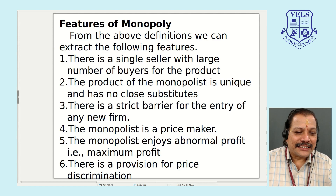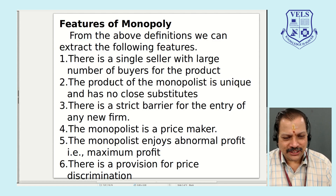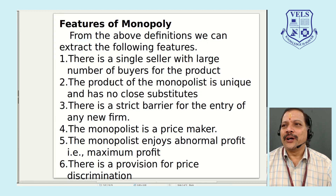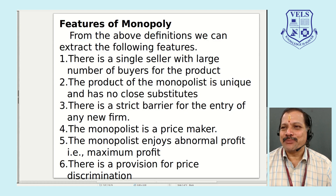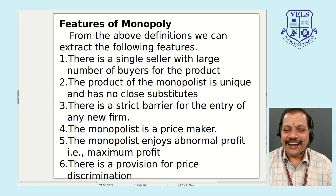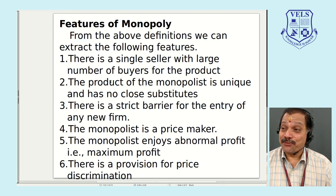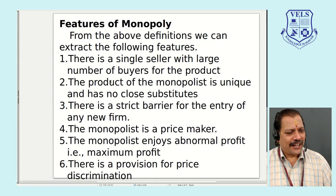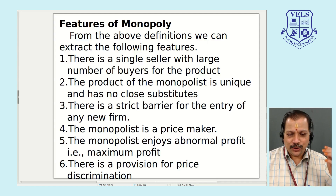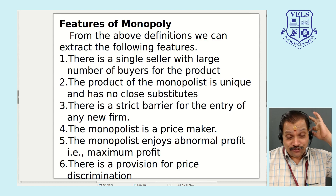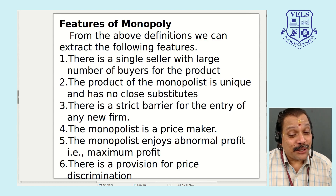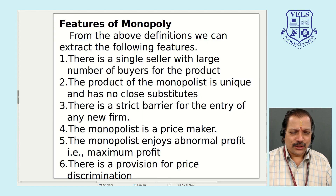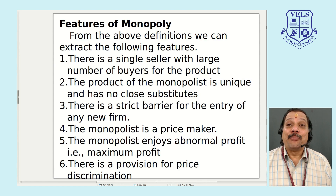The third feature is that there is a strict barrier for the entry of a new firm. New entrants cannot enter the market because the monopoly will not allow it. The fourth feature is that unlike perfect competition where the firm is a price taker, the monopoly firm is a price maker — it will fix the price for its own product and others cannot interfere.